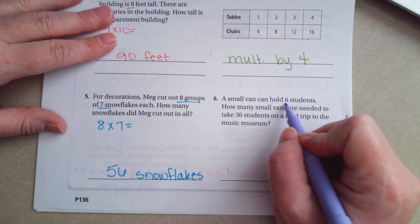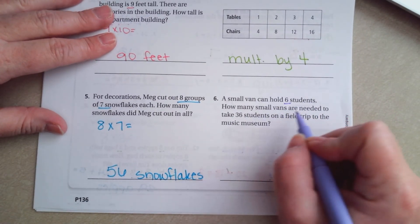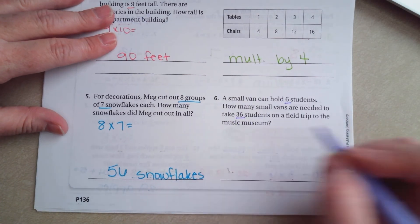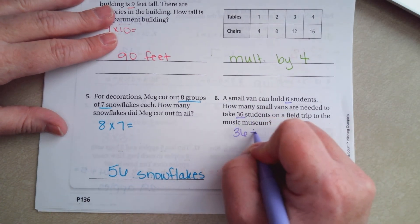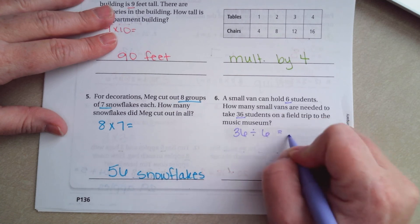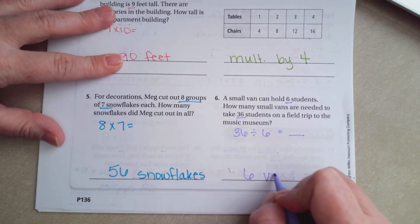A small van can hold 6 students. How many small vans are needed to take 36 students on a field trip? So 36 divided by 6 equals how many? Well that would be 6 vans.